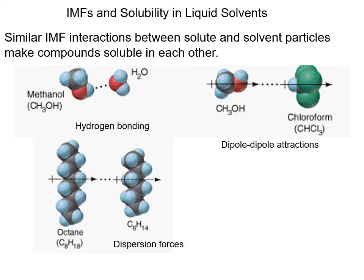Paper chromatography separates solutes from solvents based upon intermolecular forces, so let's do a quick review of that. If we have similar intermolecular interactions between solute and solvent particles, then the compounds are soluble in each other. For example, for methanol and H₂O there is intermolecular hydrogen bonding.